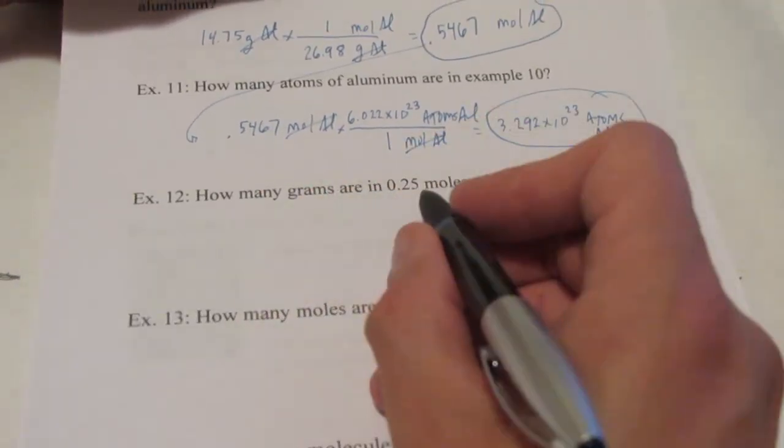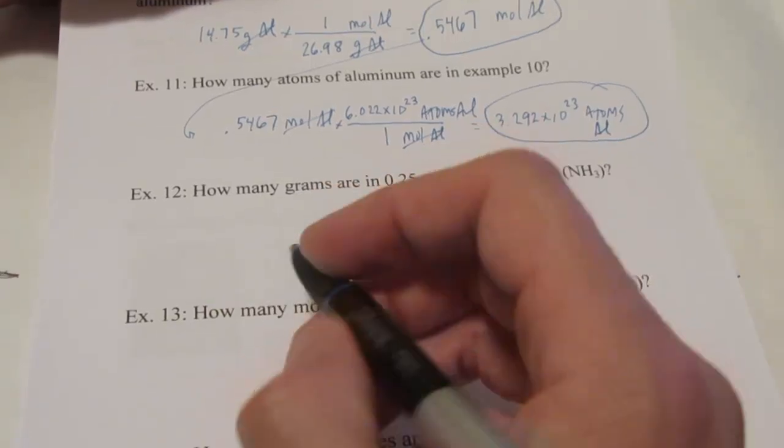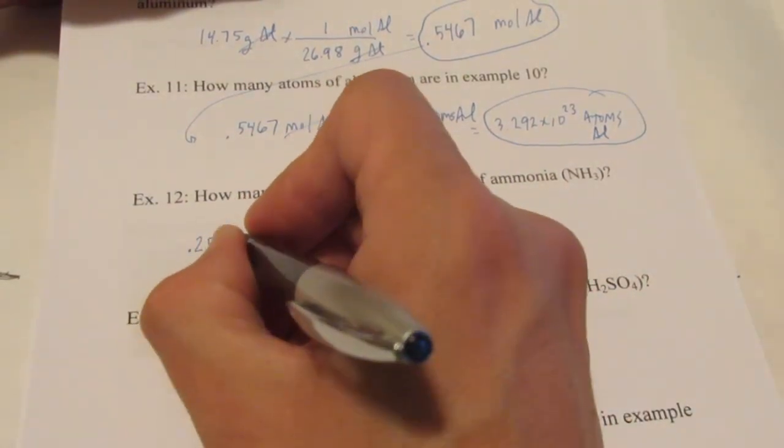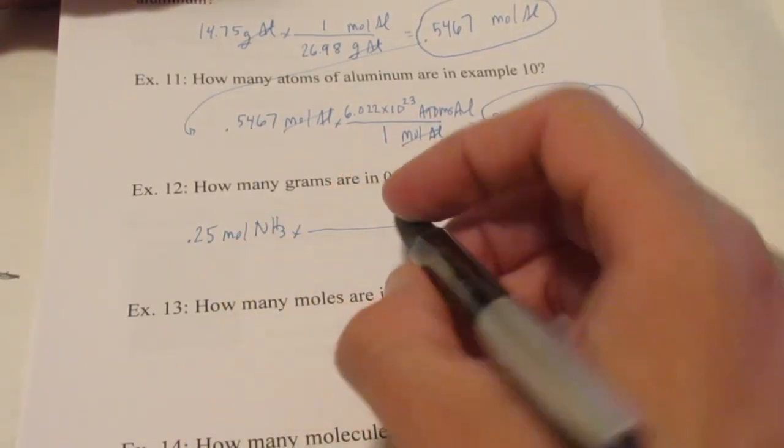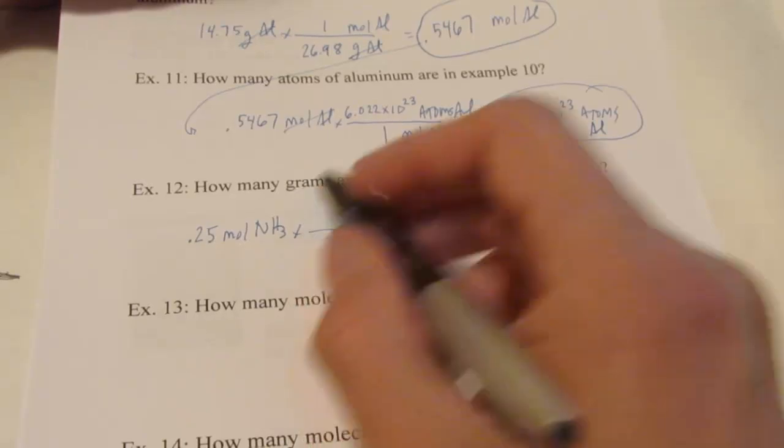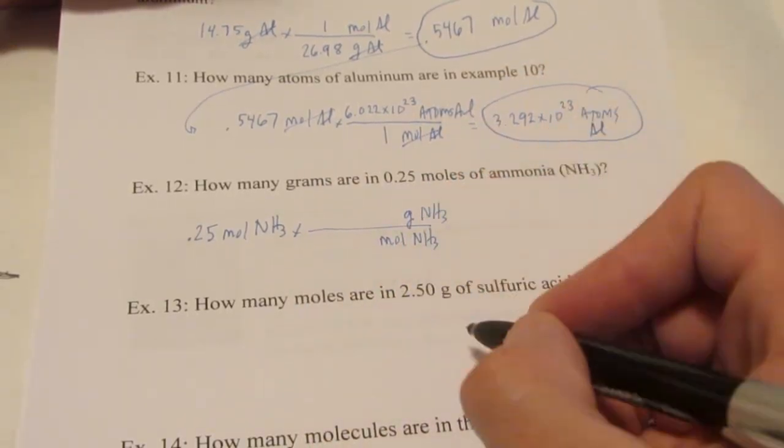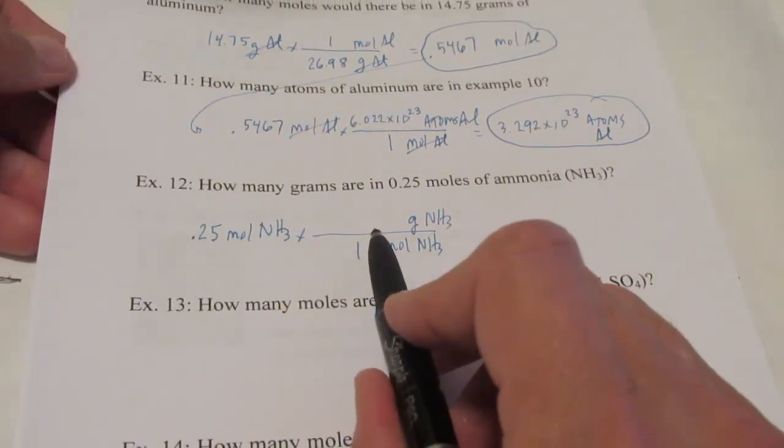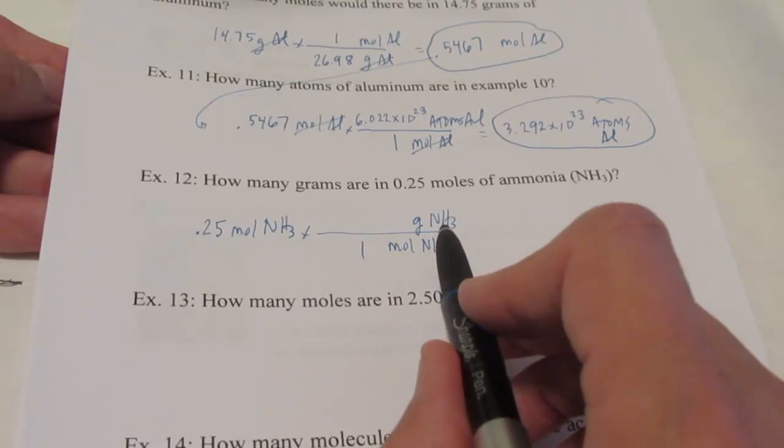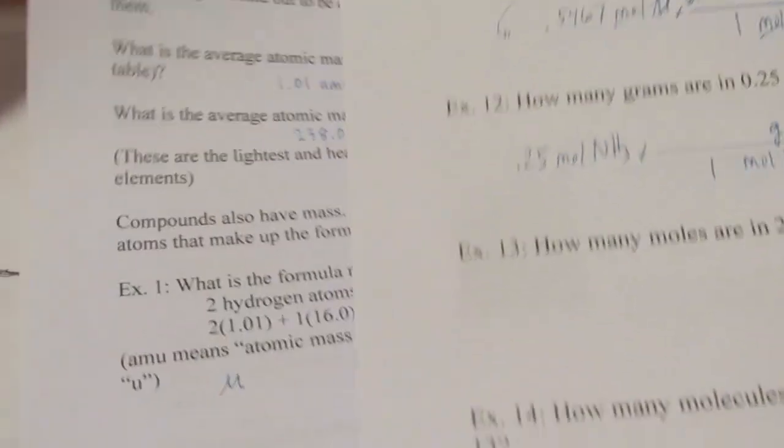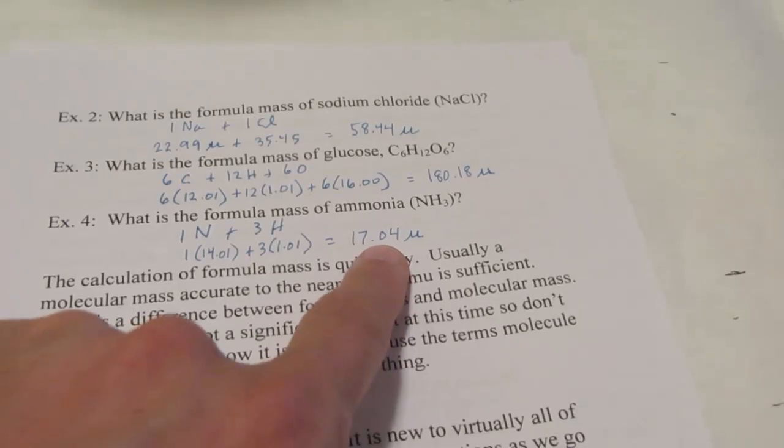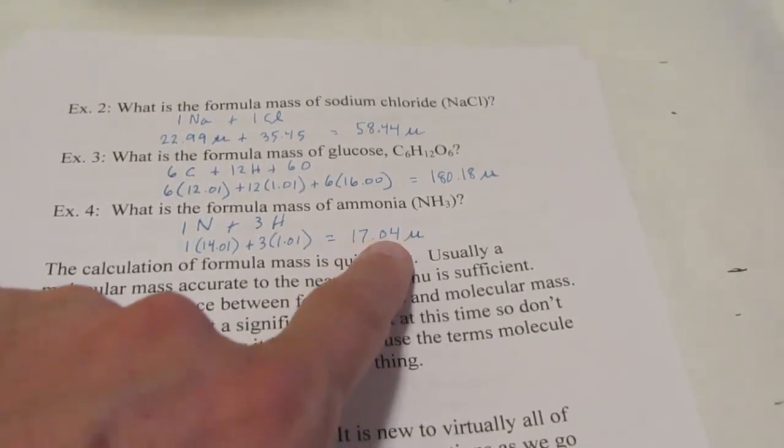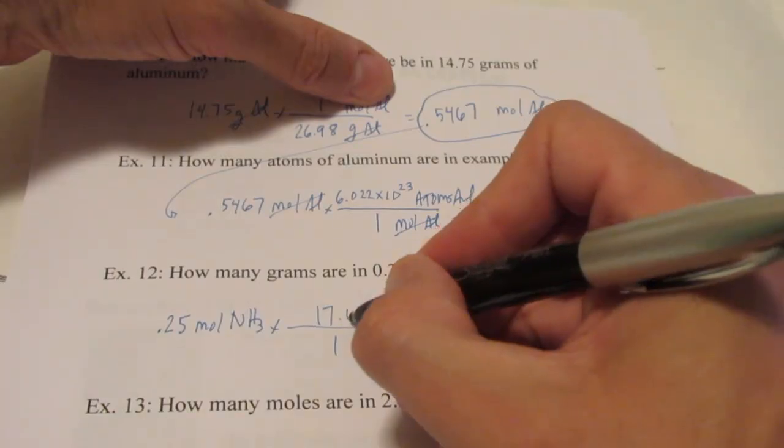So let's take a look at example 12. 0.25 moles of ammonia, and I want to hop into grams. So 0.25 moles of NH3. So we're going to put moles of NH3 on the bottom. And I want to hop into grams. So I'll put grams of NH3 on top. Put a 1 by mole. Hey, we did this calculation a few minutes ago. I wonder what the molecular weight of NH3 is. I think we found that on the previous page. Let me see if I can dig for it here for you. Oh, there it is. NH3, the formula mass is 17.04. Remember, the mass in grams is 1 mole of that compound.